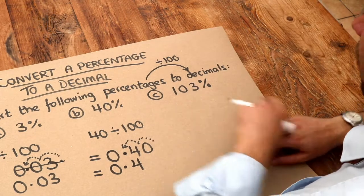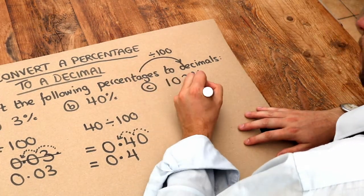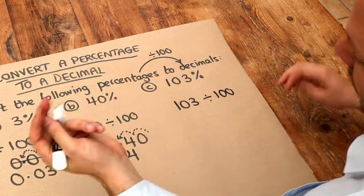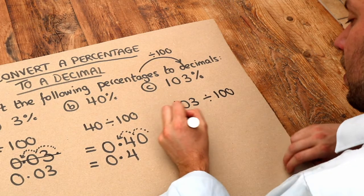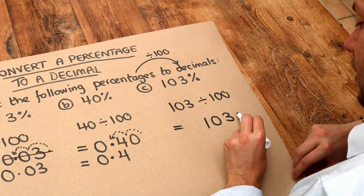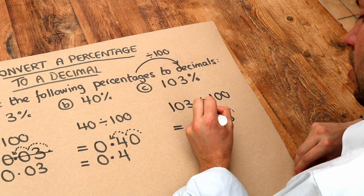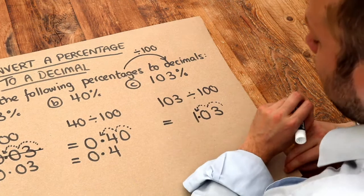And finally 103%. Again we just take 103 and we divide it by 100. Don't worry about the fact that this is more than 100% - there's nothing wrong with that. So if we write the 103 with the decimal point at the end, it moves one place and then two places, and we get 1.03.